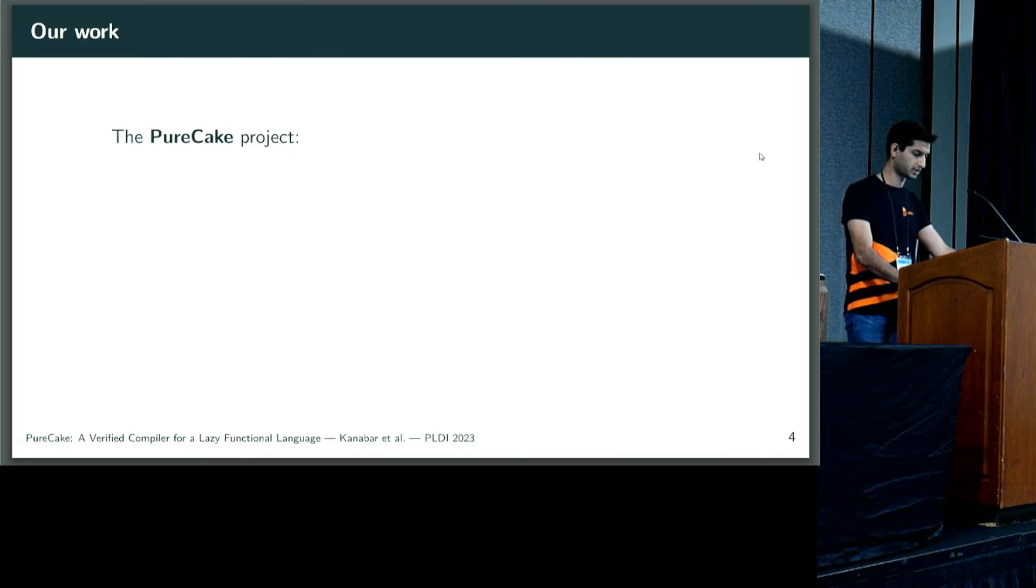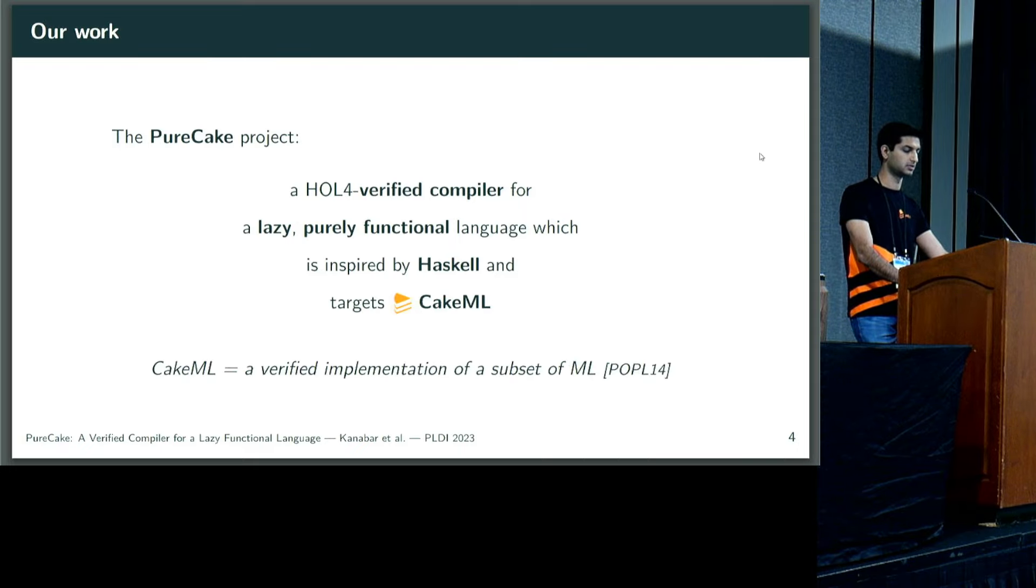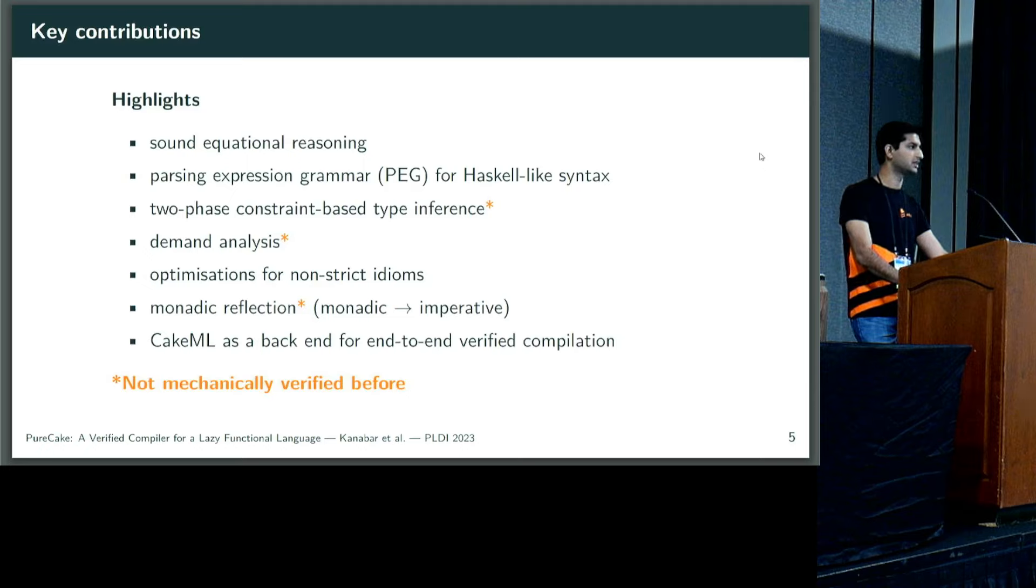So then, PureCake. PureCake is a compiler verified using the HOL4 Interactive Theorem Prover for a lazy, purely functional language, which is inspired strongly by Haskell, and which will ultimately target CakeML, where CakeML is this end-to-end verified implementation of a subset of ML. Other than verified compilation, we have lots of key contributions to the PureCake project, including some which we think haven't been mechanically verified before, even in isolation, such as two-phase constraint-based type inference, demand analysis, and monadic reflection, that is the transformation of monadic code to imperative code.